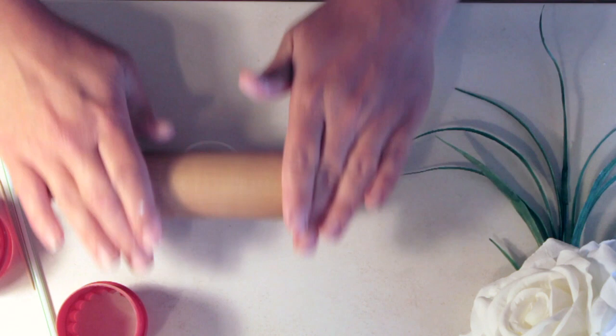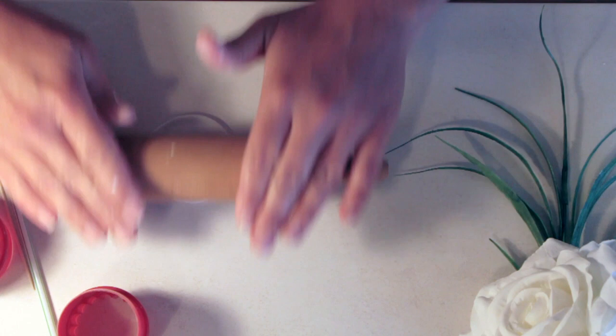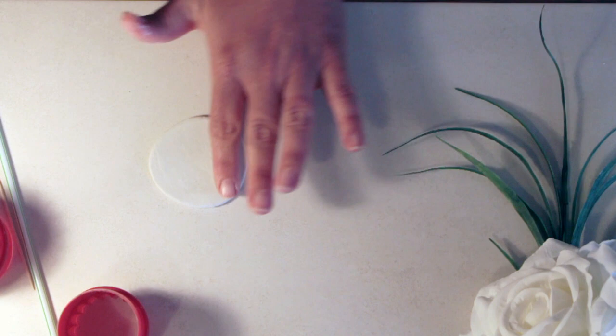I like to start off by a nice gentle even roll, and then every time I give a gentle roll I like to pick mine up and turn it so it doesn't get stuck. I'm actually rolling onto an old tile here, just a flat old tile. If you've got a piece of glass, or if you haven't got anything like that, use a bit of baking parchment.